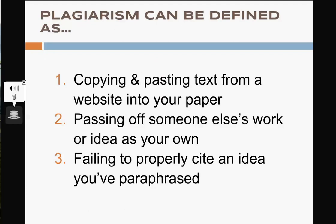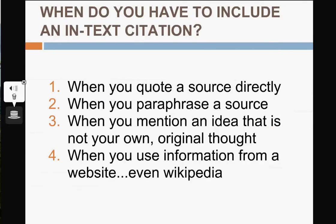You already know that plagiarism can be defined as copying and pasting text from a website or other source into your paper, and as passing off somebody else's work or ideas as your own. But did you know that failing to properly cite an idea you've paraphrased is also considered plagiarism? In fact, you need to include a citation whenever you quote a source directly, paraphrase a source, mention an idea that is not your own original thought, or use information from a website — and that includes Wikipedia.